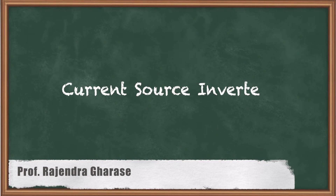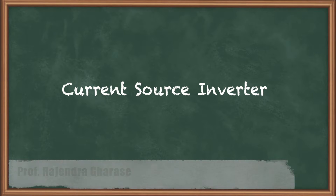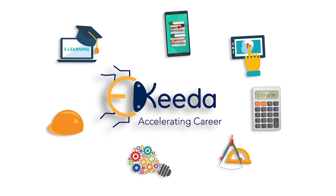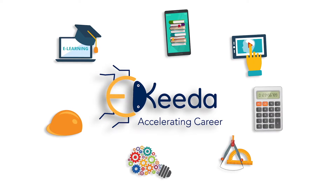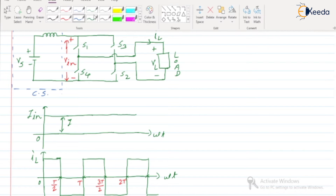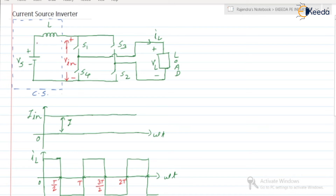Hello friends, in this video we are going to discuss about current source inverter. Current source inverter is the inverter where the input current is constant. The input current is constant — this is the input current I_in, and it is constant.